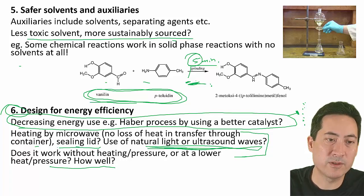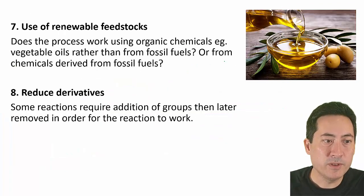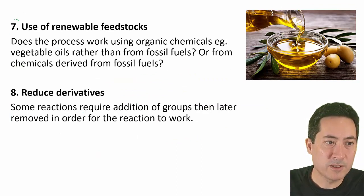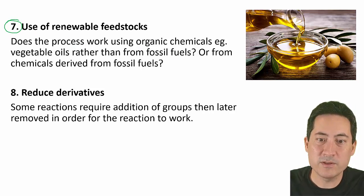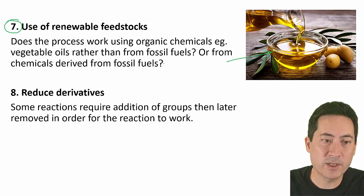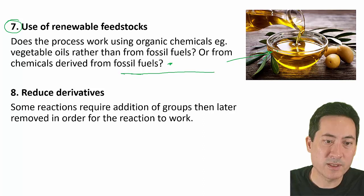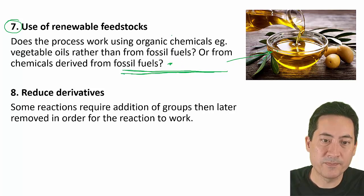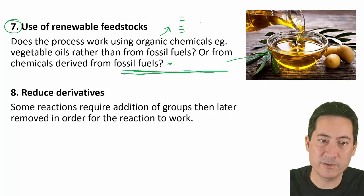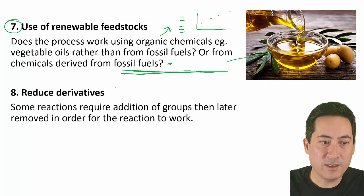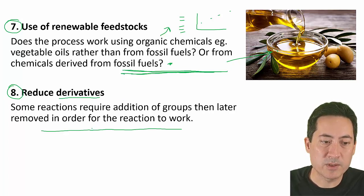Number seven — renewable feedstocks — is one I've seen done well in class. Instead of standard or fossil-fuel-based chemicals, why not use organic chemicals like olive oil or vegetable oils? You could use one organic chemical and do a range of five trials to assess its effectiveness. Number eight — reducing derivatives — means if there are two possible reactions, choose the one that uses fewer chemical steps.